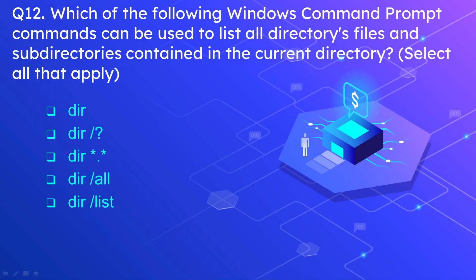Question number twelve: which of the following Windows command prompt commands can be used to list all directory files and subdirectories in the current directory? Select all correct options. The options are DIR, DIR /?, DIR *.*, DIR /all, and DIR /list. These two options — DIR and DIR *.* — list all the contents in the current directory.